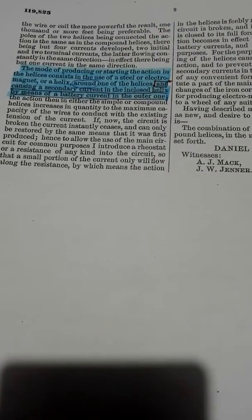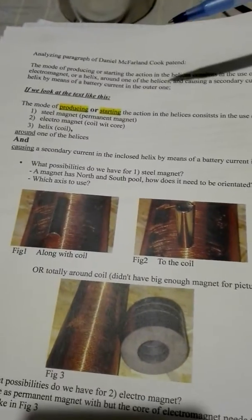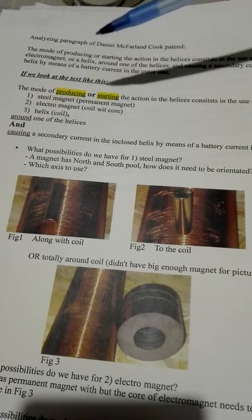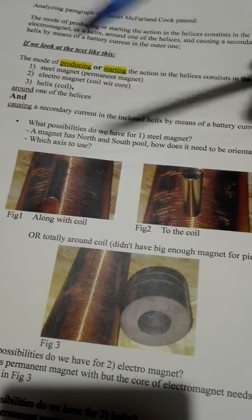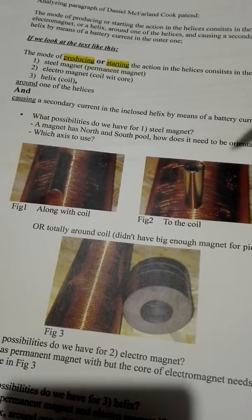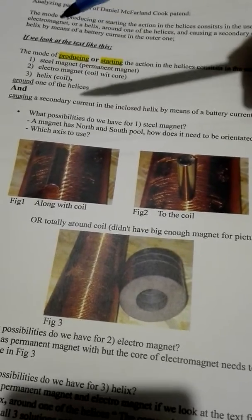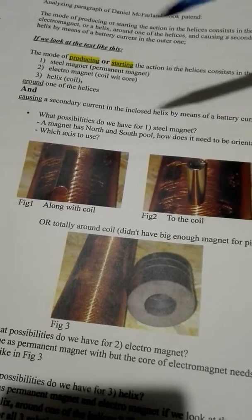So I came to this one sentence in the patent, and I want to analyze it more because here is stated how to produce or to start the system. So if we look at this, there can be other ways. I can be totally wrong, so please don't follow me. Make your own analysis. But this is what I think about it.